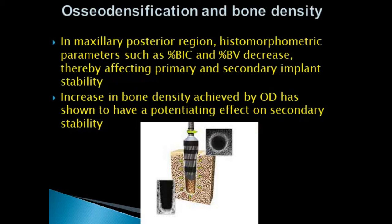In the maxillary posterior region where bone density is less, parameters like percentage of bone-implant contact and percentage of bone volume decrease, affecting both primary and secondary stability. However, in osseodensification, imaging has shown a layer of increased bone mineral density around the periphery of the osteotomy — the densifying crust. This increase in bone density achieved by osseodensification has a potentiating effect on secondary stability, enhancing both primary and secondary implant stability. Therefore, osseodensification is a technique that can be used in low-density bone.